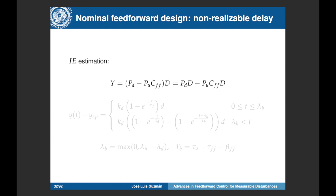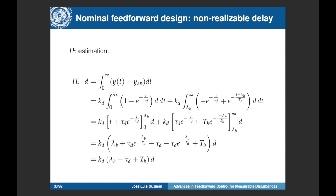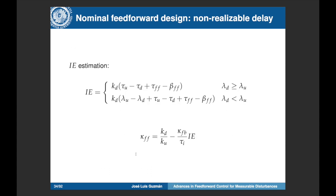Since we use first-order transfer functions and step-like disturbance signals, we can easily get the temporal response. In the time delay inversion problem, we first get a response only from pd, and once the difference between the time delays passes, we get the rest of the response. We can integrate this temporal response and obtain a very simple expression for an estimation of the integral error that applies to two cases: the case with no time delay inversion problem, and the time delay inversion case we are studying.